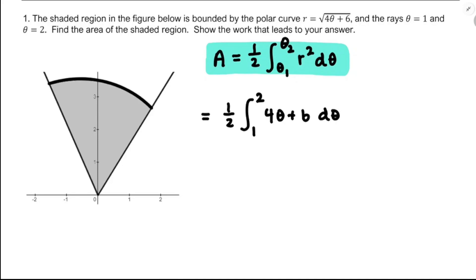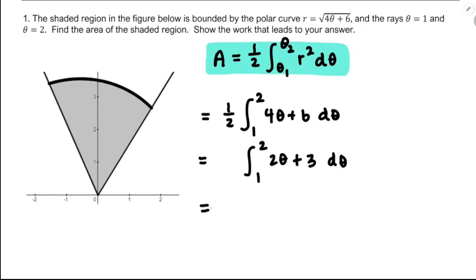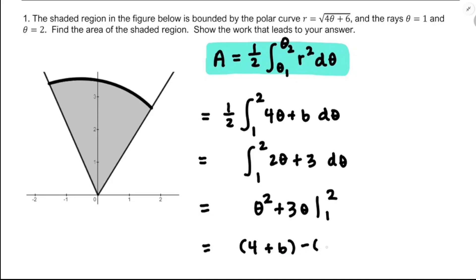I'm usually factoring numbers out of an integral, not putting them back in. But I see that one-half and the four and six are even numbers, so I want to distribute it: that becomes two-theta plus three, and the one-half is gone. Finding the antiderivative and plugging in the top and bottom: four plus six is ten, minus one plus three is four, giving a total area of six units.